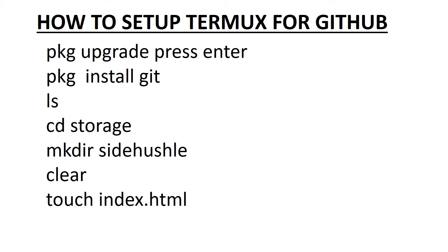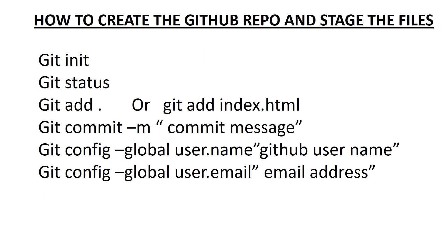If you want to create a file like your index or your CSS file, you just need to type touch then the name of the file plus the extension — it could be style.css, style.js, or index.html. I advise you use index.html for your HTML file and make all letters lowercase — so it would be index.html.